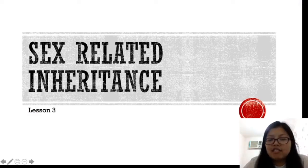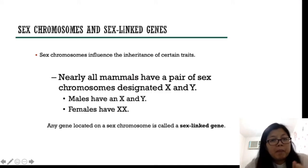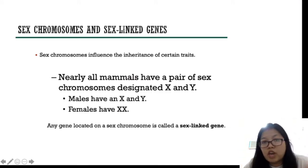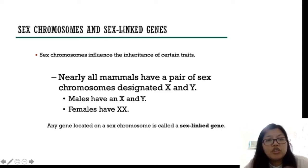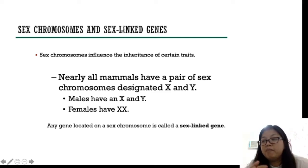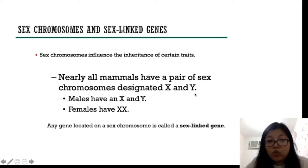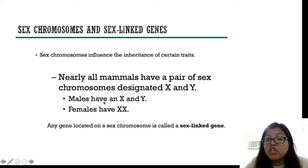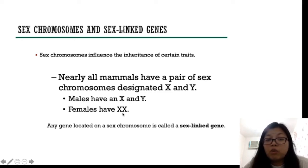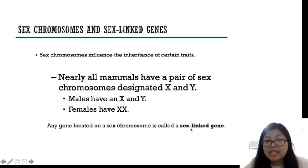Welcome to lesson 3, which is sex-related inheritance. Remember, there are two types of chromosomes in our genome: we have the autosomes and the sex chromosomes. Sex chromosomes also influence or code for a number of inherited traits. Nearly all mammals have a pair of sex chromosomes designated as X and Y chromosomes. Males are those individuals with X and Y chromosomes, and females are those which contain double X chromosomes. Any gene that is coded in the sex chromosomes is called a sex-linked gene.